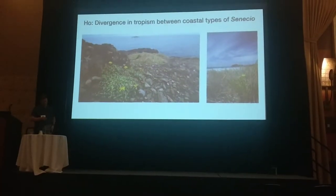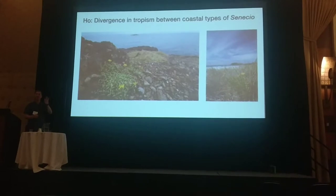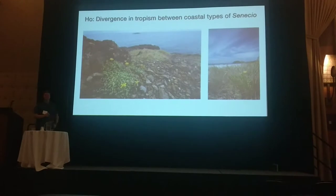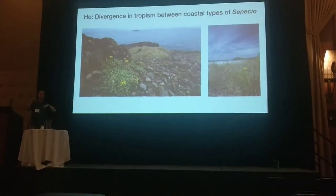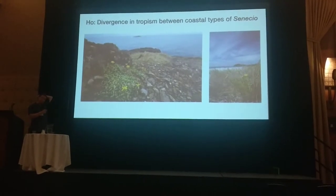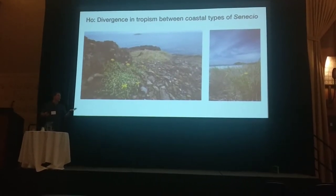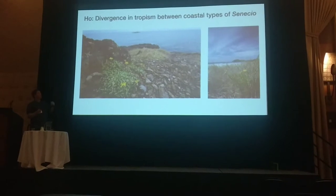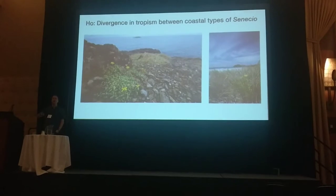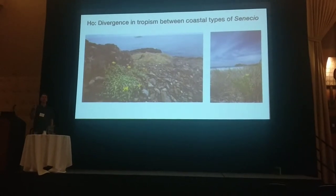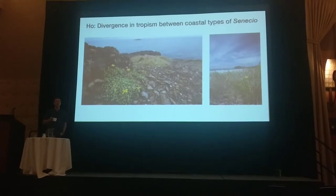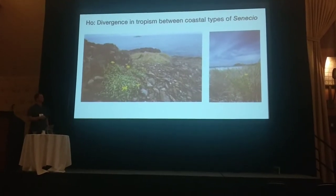So we have the hypothesis, based on the population genetics data, that the dune and the headland ecotypes have diverged physiologically. But how do we test that? We have actually flipped the approach: instead of looking at the genes that might control this, we ask — if we know that divergence in tropism might be involved, what do auxin mutants in a model species look like? How have their phenotypes been surveyed? Then we can make predictions about novel phenotypes that should be divergent between these two ecotypes.